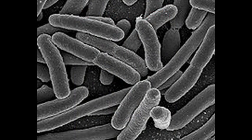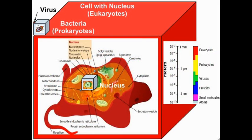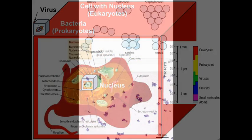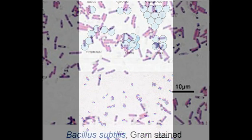Bacteria are small single cells without any nucleus, mitochondria, or any other membrane-bound organelles. They are about 10 times smaller than a normal cell containing a nucleus, and about 10 times larger than a virus. They have a wide range of shapes, ranging from spheres to rods and spirals. Most bacteria species are either spherical, called cocci, or rod-shaped, called bacilli.